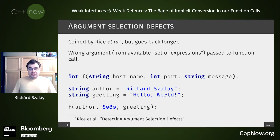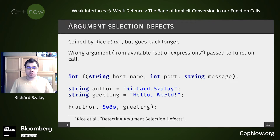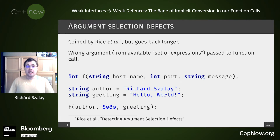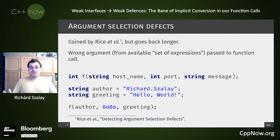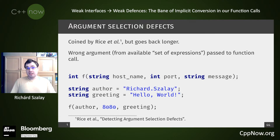The argument selection defect is when a developer, when calling a function, selects into the function call an argument from some set of available expressions — maybe other variables that are visible in the scope — the wrong one. This is what the literature calls it; it's been established in previous research by Google. Like in the example, we have two strings with values that don't really match the intended way of using the function, but because they are just strings, the compiler will happily accept them.